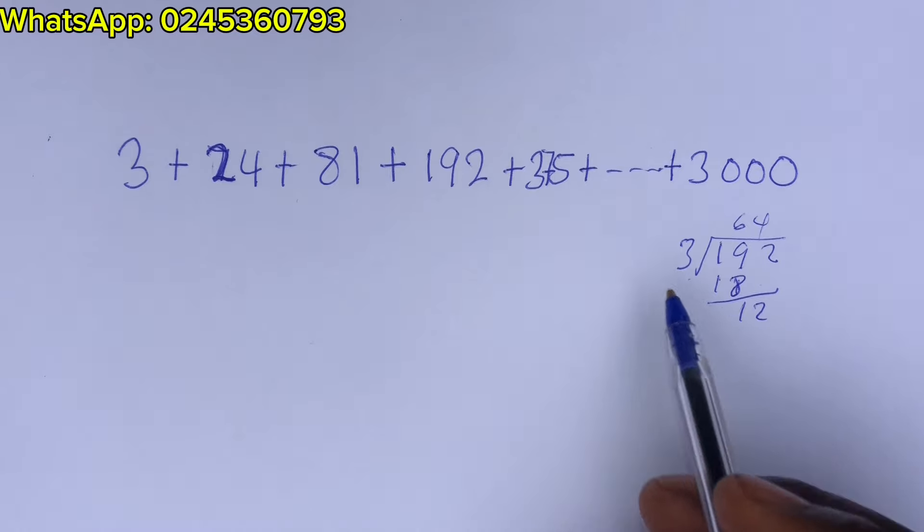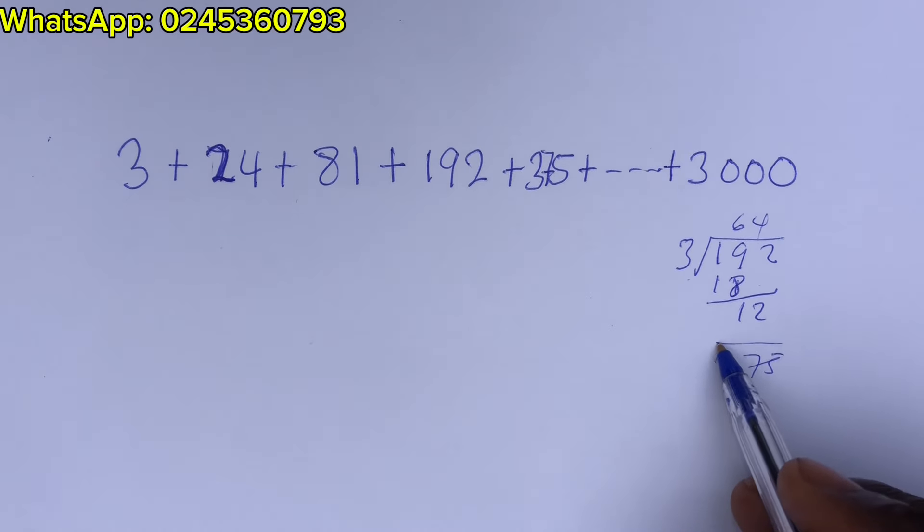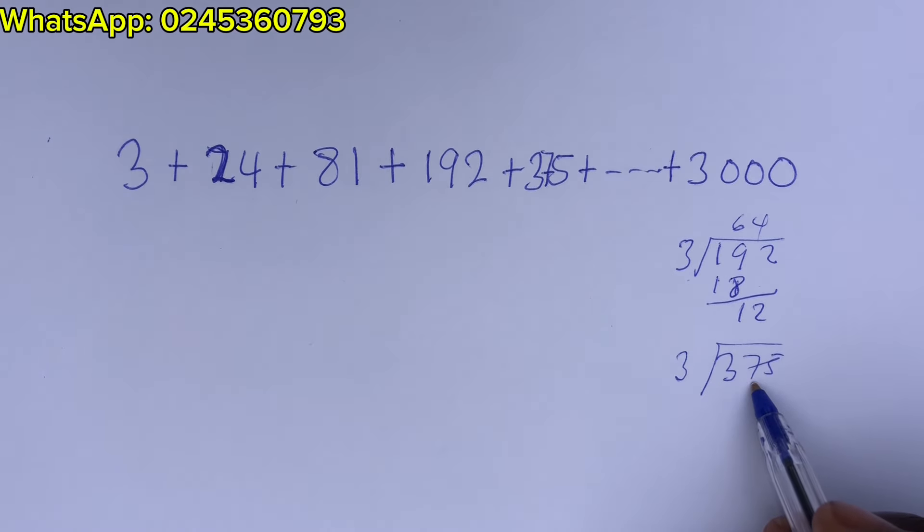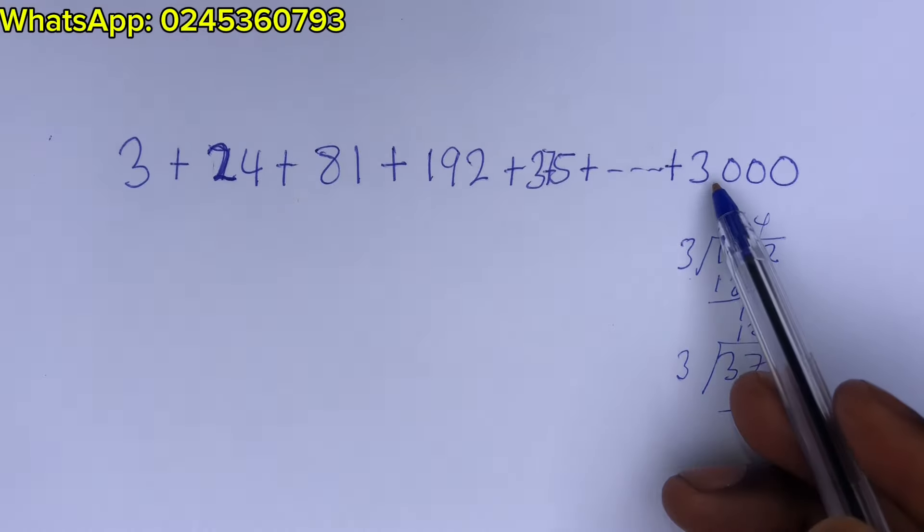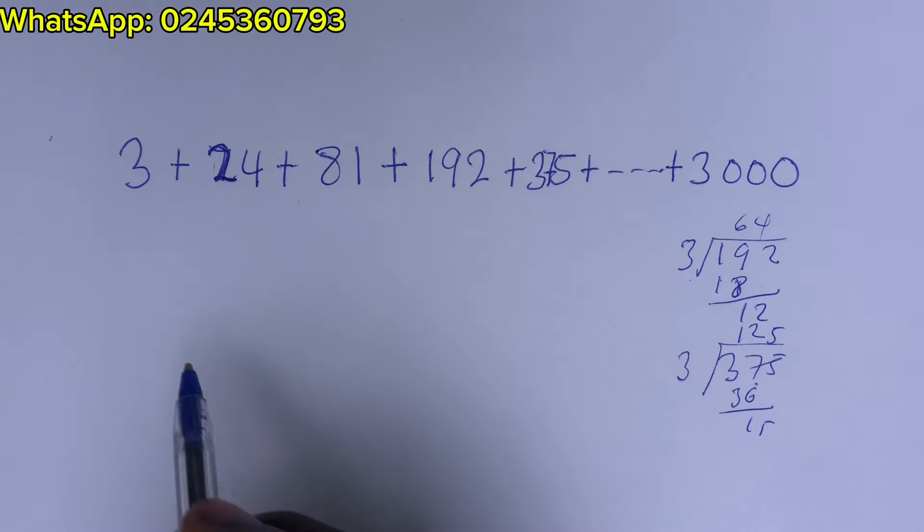Then can 3 go into 375? 3 will go into 37, 12 times, 36. If we subtract, we get 15. 3 will go here 5. Okay. So let us factorize the 3 out.